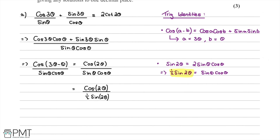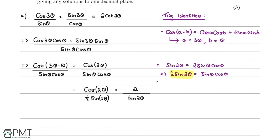Dividing by a half is the same as multiplying by 2. We also know that cosθ/sinθ = 1/tanθ. So in this case the expression becomes 2cos(2θ)/sin(2θ), and noting that cosθ/sinθ = 1/tanθ, our denominator becomes tan(2θ).